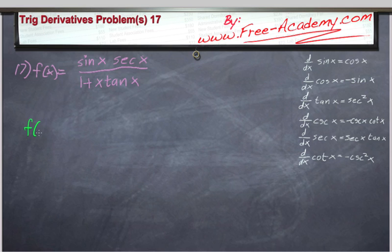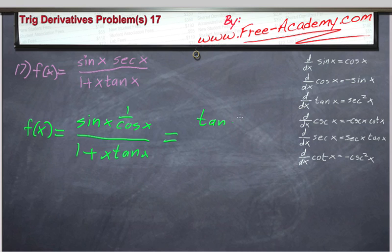So we'll start out by doing that. F of x is equal to sine of x, and secant of x is 1 over cosine of x. This is divided by 1 plus x tangent of x. So on the numerator, we have sine over cosine.